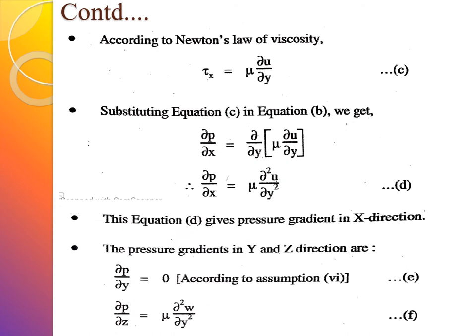The pressure gradient in the y-direction is ∂p/∂y = 0, consistent with our assumption that the pressure gradient in the film thickness direction (y) is zero. The pressure gradient in the z-direction is ∂p/∂z = μ·∂²w/∂y², where w is the velocity in the z-direction.